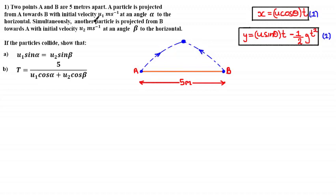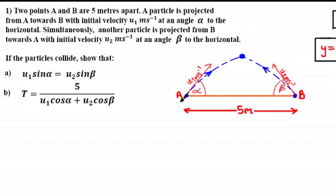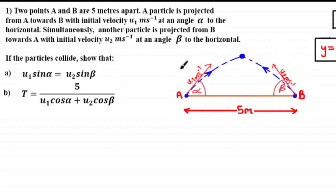Since we've been given the initial velocities and angles of projection for each particle, we can add these to the diagram: particle A projected with initial velocity u₁ meters per second at angle alpha to the horizontal, and particle B projected in the other direction at u₂ meters per second at angle beta. In mechanics questions with two particles, you can use two separate systems, but here I'm going to model both particles as part of one whole system, which will become clearer once we split the vectors into two perpendicular components.